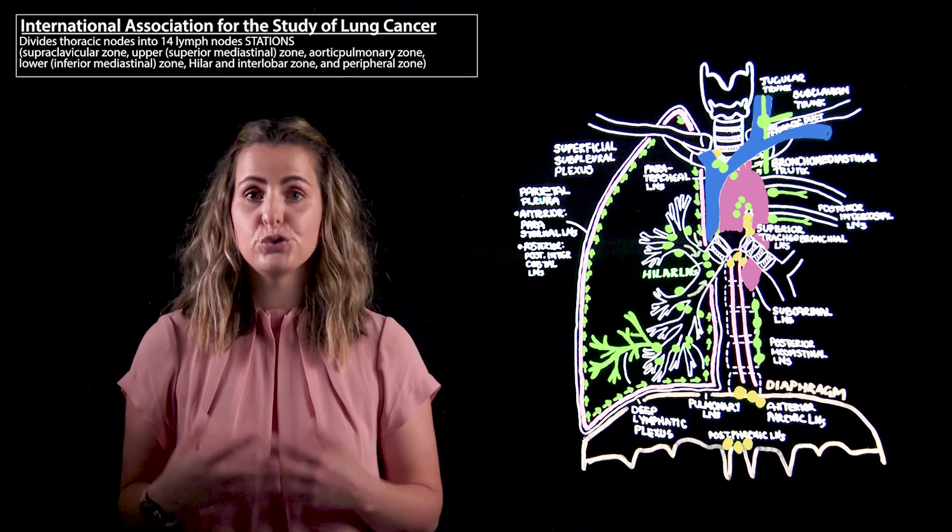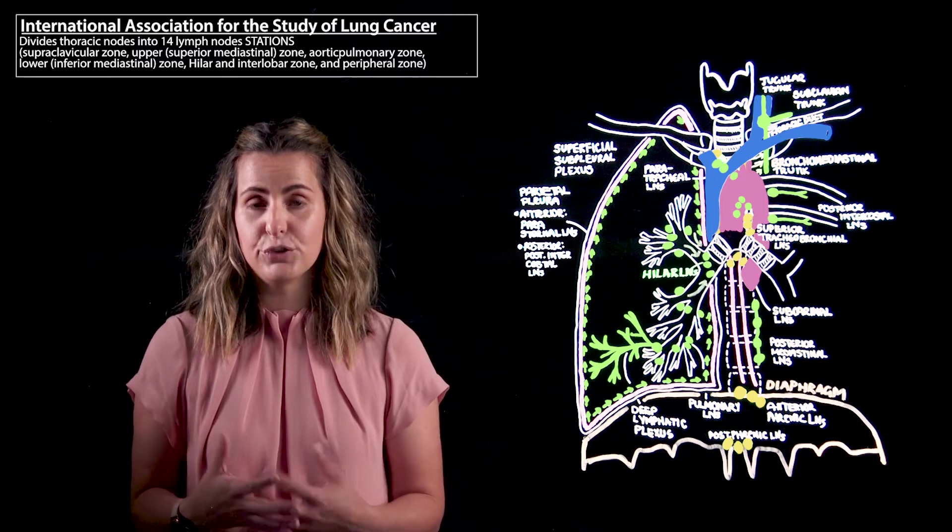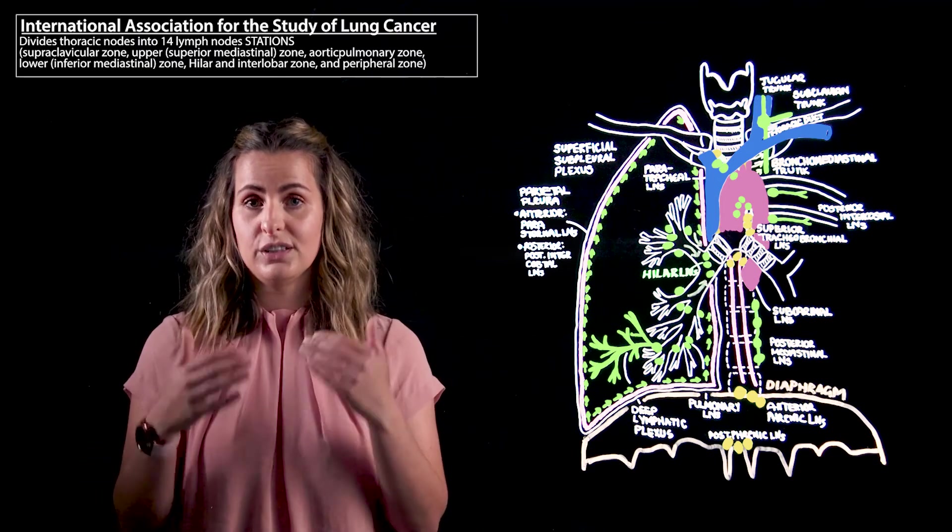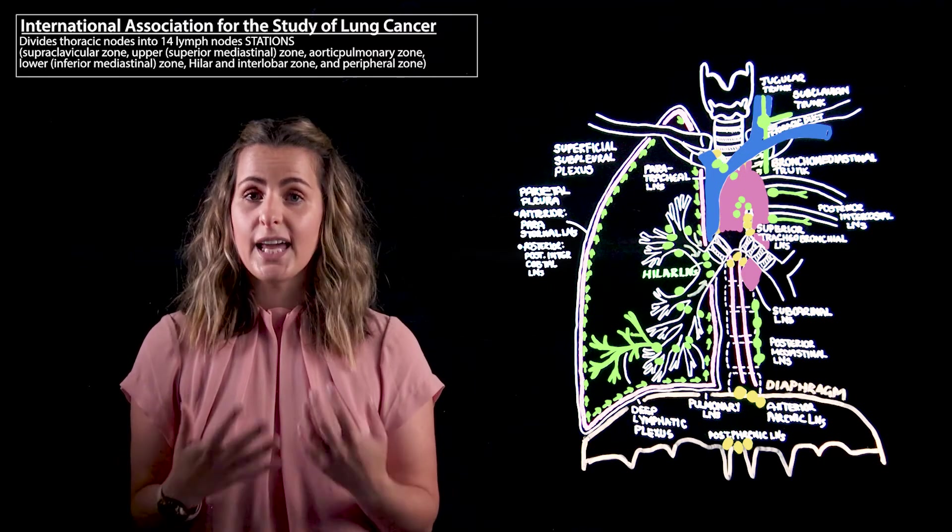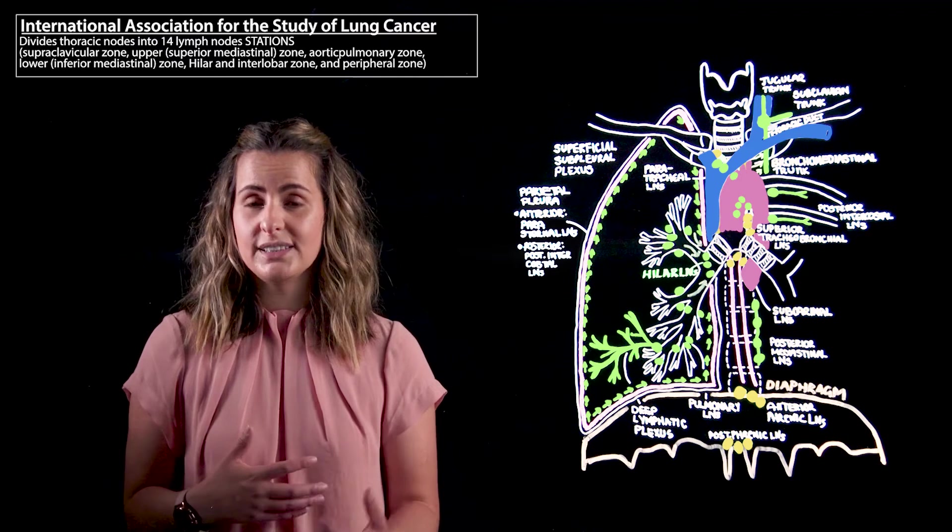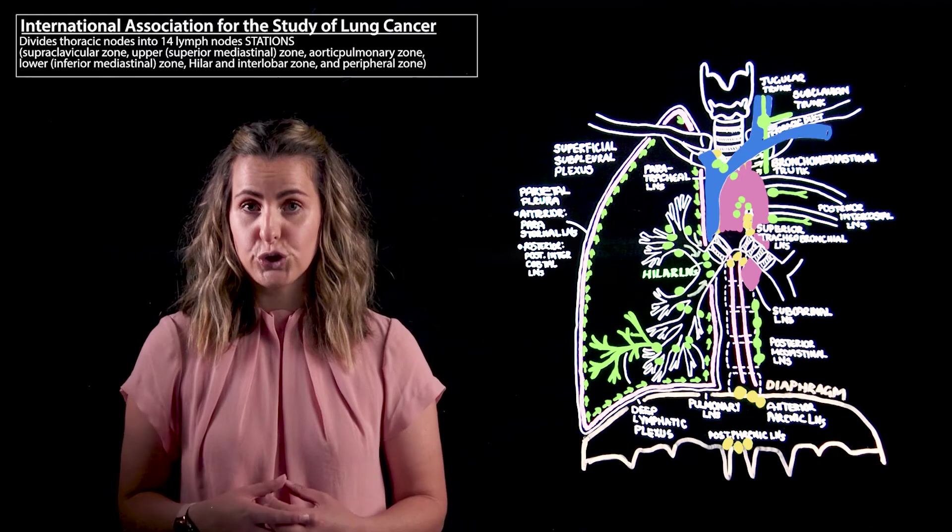If we firstly refer to Station 1, which is going to be the equivalent of the highest thoracic lymph nodes, these are going to be located in that supraclavicular zone around the level of the apex of the lung and these include the nodes of the inferior deep cervical lymph nodes, our supraclavicular, and our sternal notch lymph node groups.